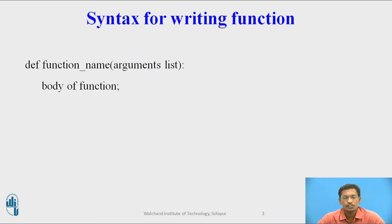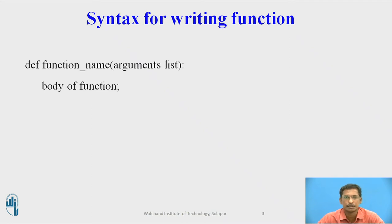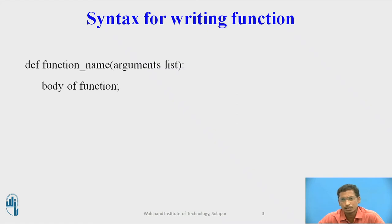The syntax for writing a function in Python is: 'def' followed by a function name and then, in brackets, the argument list. The argument list is the variables or values which are passed to the function while calling it. 'def' is a keyword that stands for definition, used for defining a function.